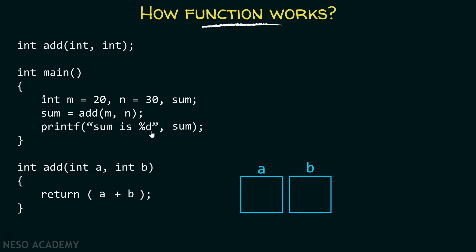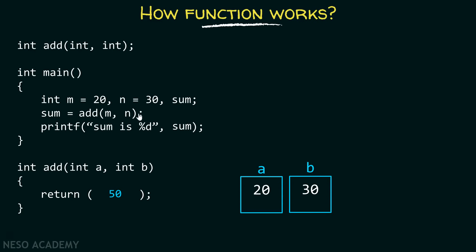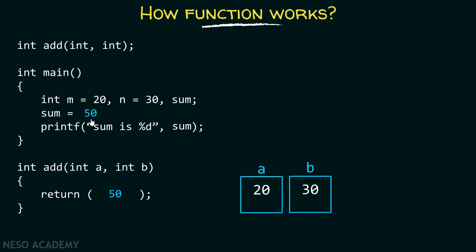When we call the function, we pass the values of m and n to variables a and b. The value of m, which is 20, will get passed to variable a, and the value of n, which is 30, will get passed to variable b. So a will contain value 20 and b will contain value 30. Inside this function we are adding these values — a gets replaced by 20 and b by 30, and then finally we add them together which will return 50. We simply return this value 50 back to the calling procedure, and the function call will get replaced by 50. Now the sum variable will contain value 50.